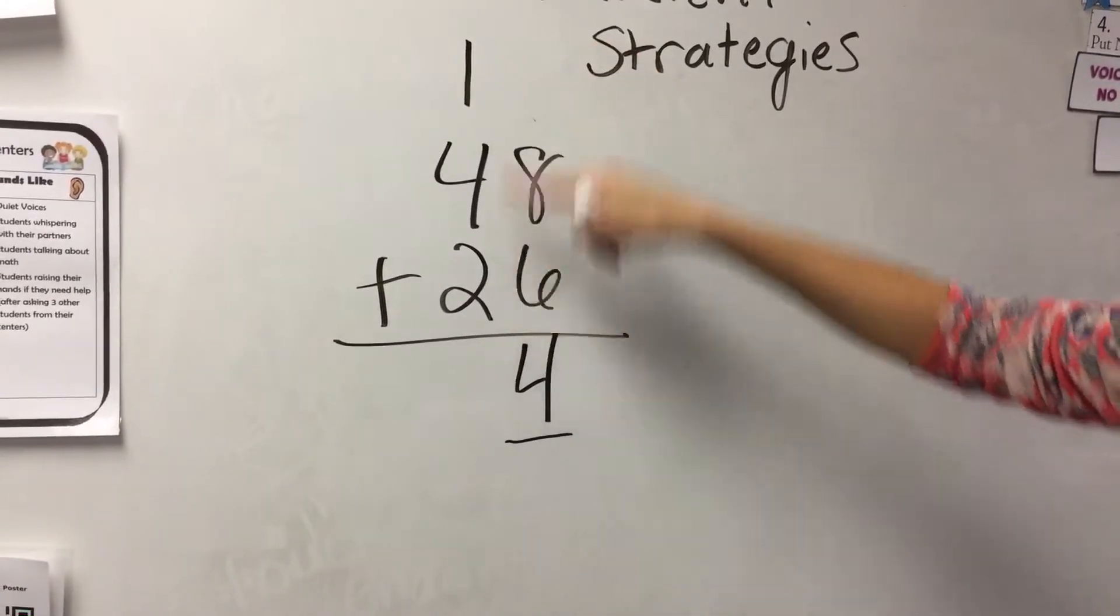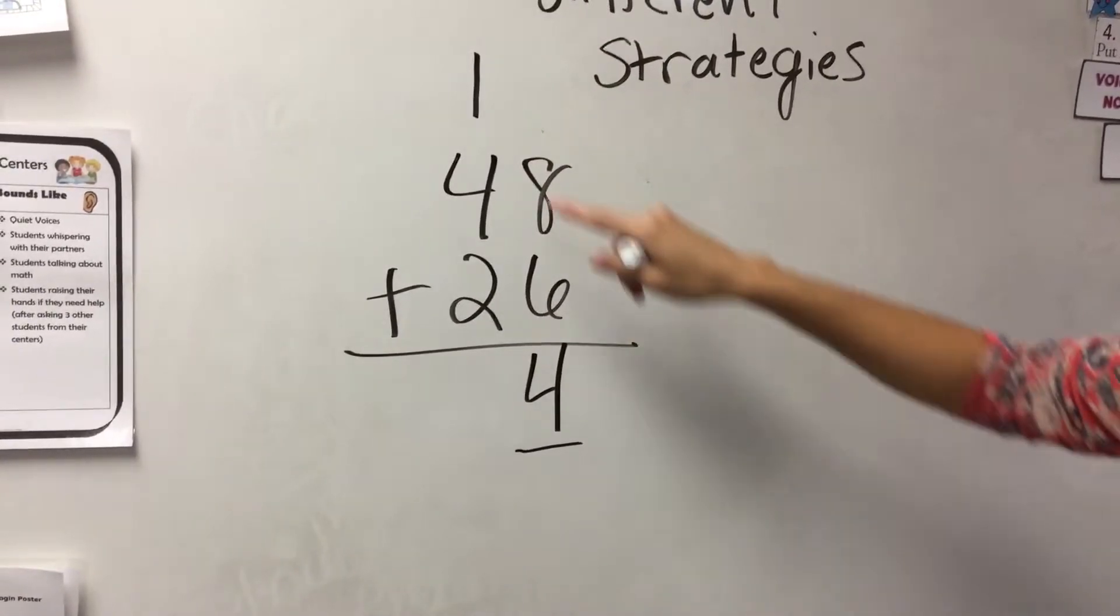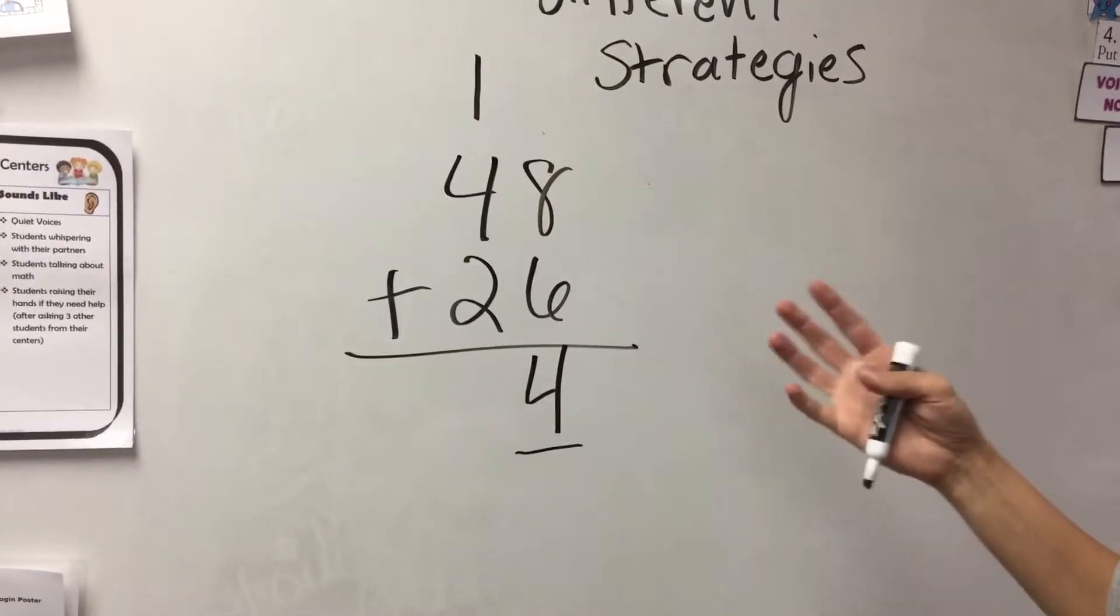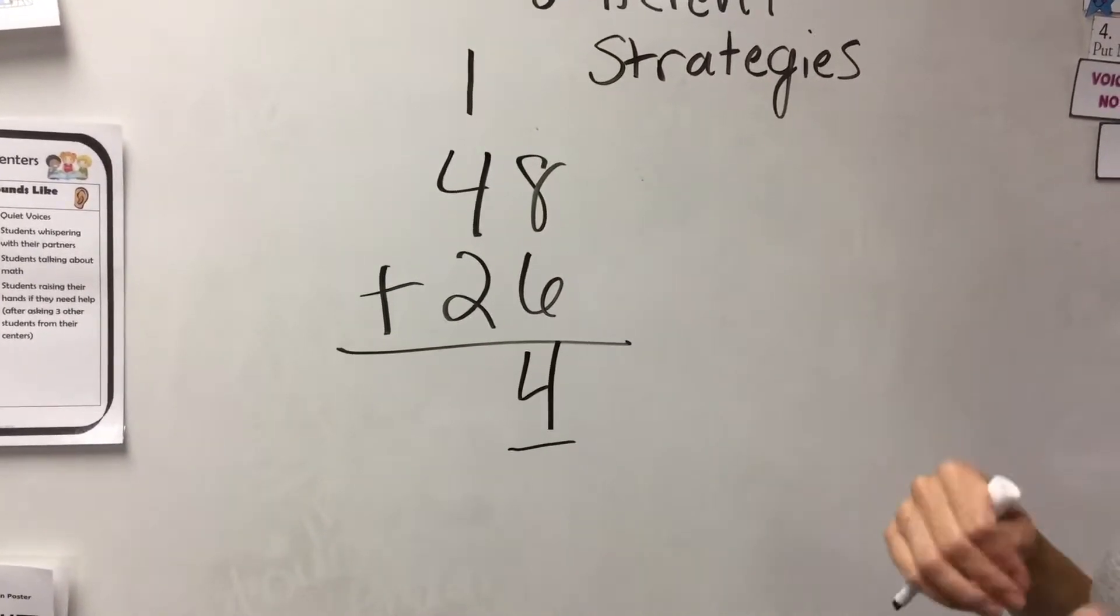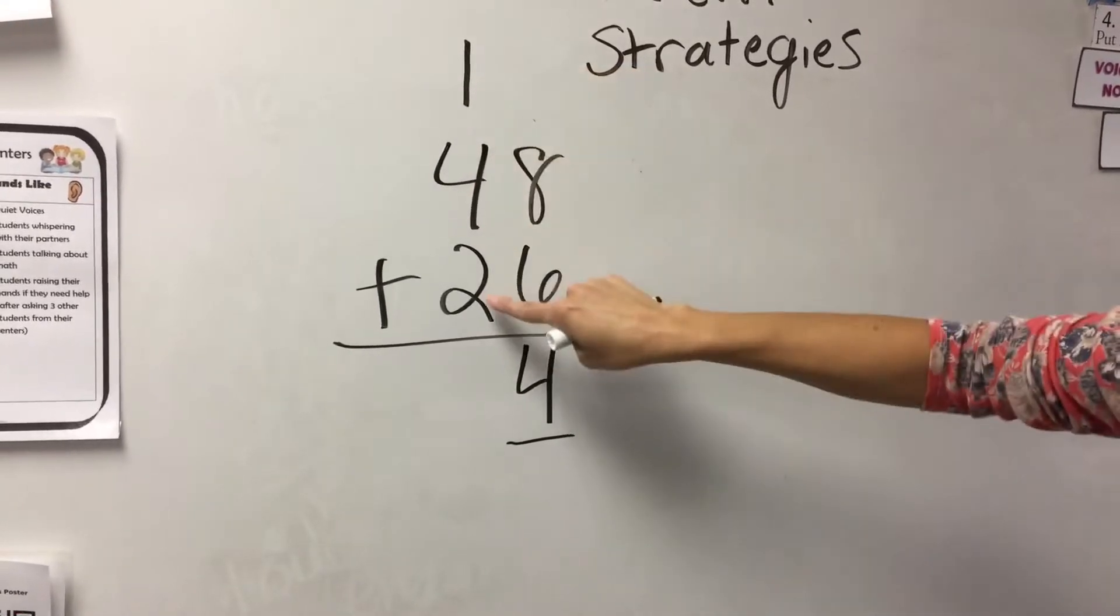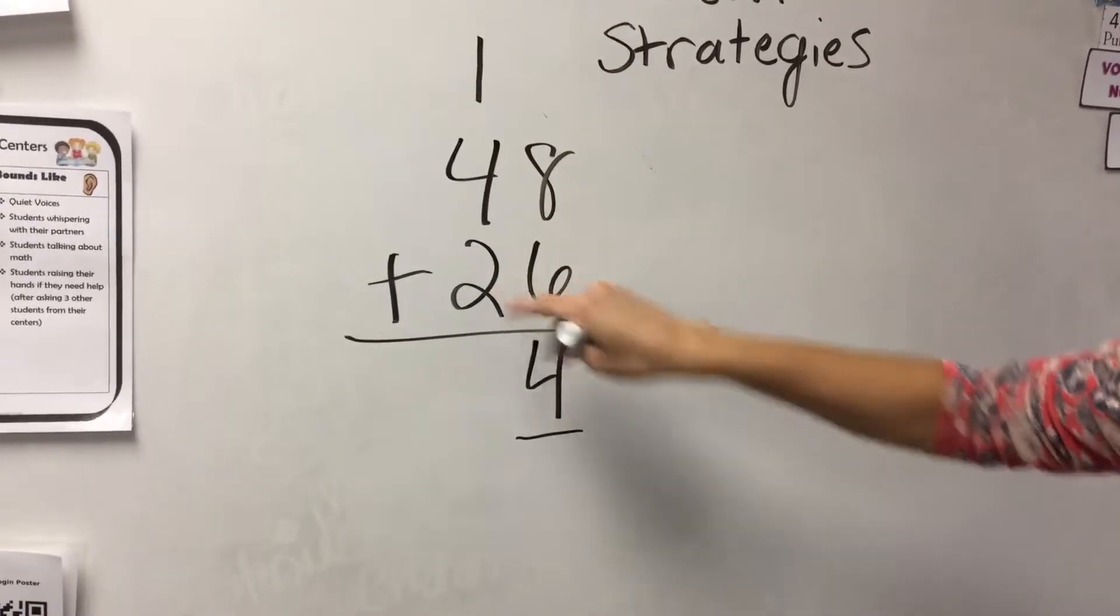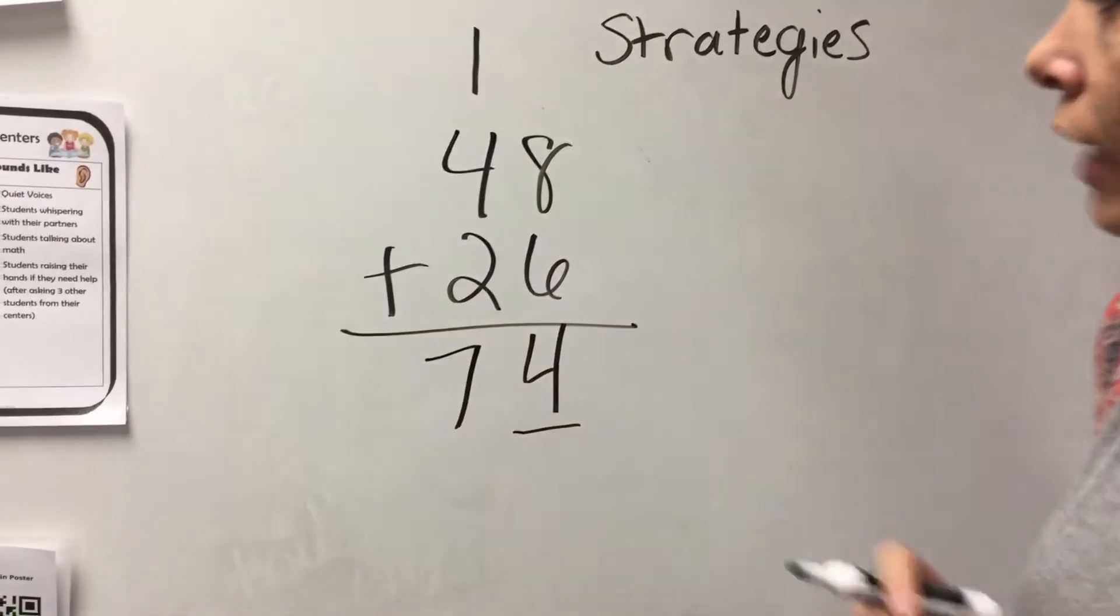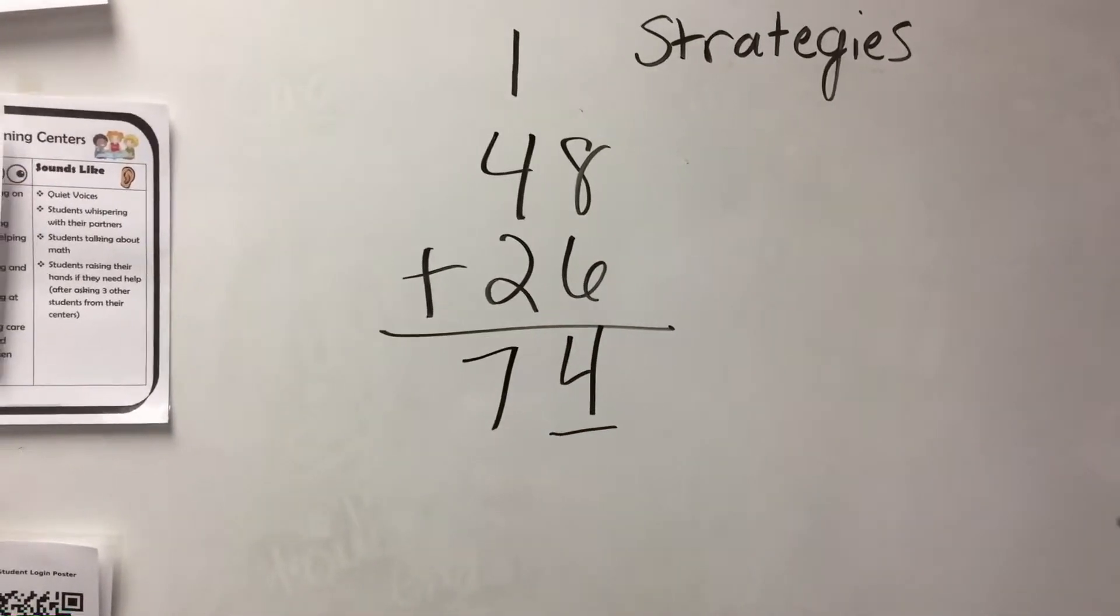So now I'm going to look here at my tens column and see that I have one plus four plus two, and I'm going to decide in my head how I want to group and add those together. So I'm going to do four plus one first in my head, and that's five. And then I'm going to do five plus two, and that happens to be seven. So then I've arrived at my answer of 74.